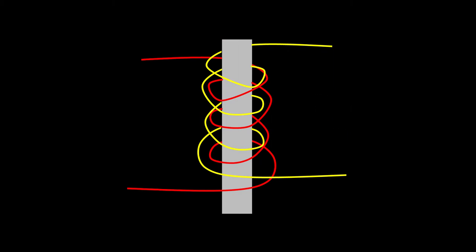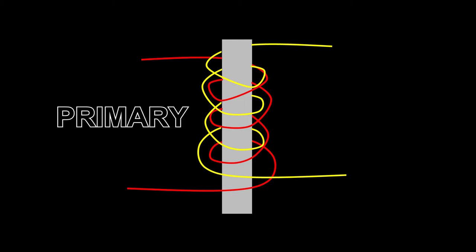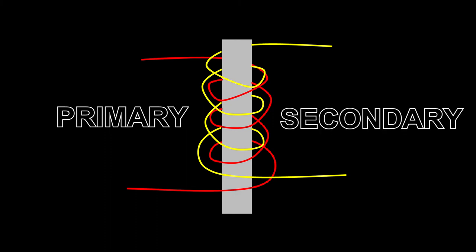If the windings are identical on both halves of a transformer, it is considered an isolation transformer, and the output is the same as the input. The input side of the transformer is called the primary winding, and the output side is called the secondary winding. A transformer blocks DC current applied to the primary winding from reaching the secondary winding.